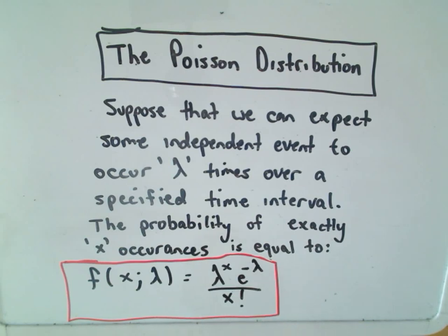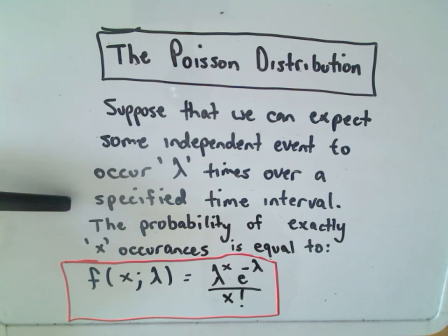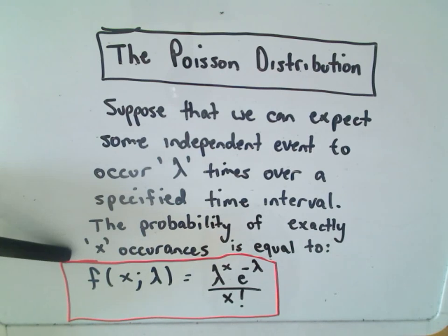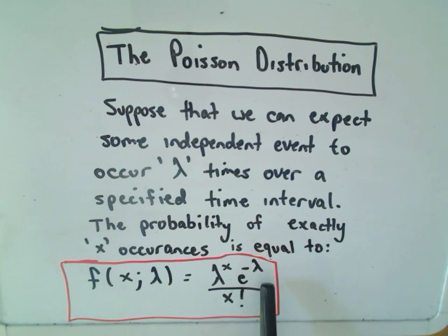In this video I want to talk about what's called the Poisson distribution. It models a situation where we can expect some independent event to occur lambda times over some specified time interval. The probability of getting exactly x occurrences is a function of both x and lambda: we take lambda raised to the x power, multiply that by e raised to the negative lambda, and divide that by x factorial.